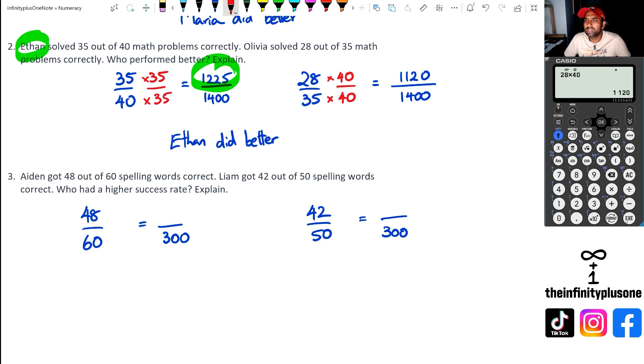Now, I know that 60 times five is 300. Now, sometimes you might be like, well, how do I know that I've got to multiply by five? Well, in that case, all you got to do is you got to go 300 divided by 60. So 300 divided by 60, that gives me five. So I'm going to multiply the numerator and the denominator by five. So we're going to get 48 times five, which is 240.